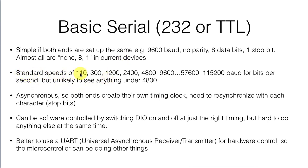RS-232 has standard speeds of 110 up to 115,200 baud — that stands for bits per second — and you're unlikely to ever see anything under 4,800 baud. 110 baud was the speed of the early acoustic couplers attached directly to a telephone, and 1,200 baud were the first personal computer modems. At 4,800 baud, with about 10 bits per character, that's roughly 480 characters per second — about 60 words per second — which is fairly fast for reading typeset data, but not so fast for transmitting images.